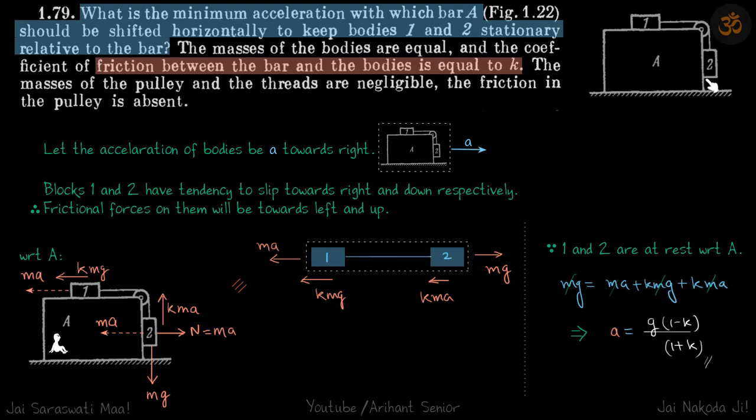We are given this pulley block system and some friction exists between these two blocks. We need to find what should be the acceleration of the bigger block such that both 1 and 2 are at rest.